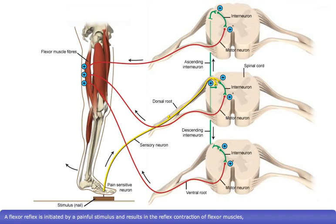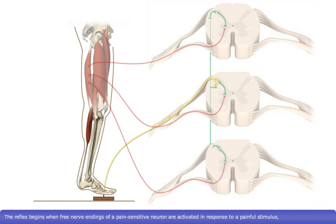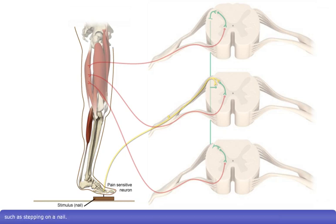A flexor reflex is initiated by a painful stimulus and results in the reflex contraction of flexor muscles, withdrawing the limb from the stimulus. The reflex begins when free nerve endings of a pain-sensitive neuron are activated in response to a painful stimulus, such as stepping on a nail.